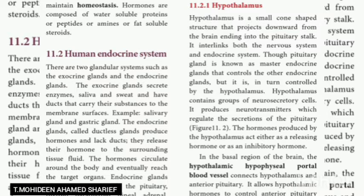Hormones are composed of water-soluble proteins or peptides, amines, or fat-soluble steroids. There are two glandular systems: exocrine and endocrine glands. The exocrine glands secrete enzymes, saliva, and sweat and have ducts to carry substances to membrane surfaces — for example, salivary gland and gastric gland. The endocrine glands, called ductless glands, produce hormones and lack ducts. They release their hormones to surrounding tissue fluid, and the hormones then circulate around the body to reach the target organs.